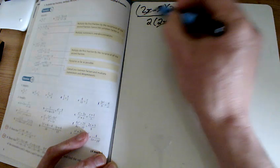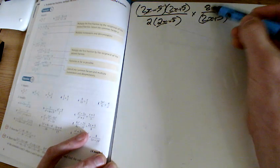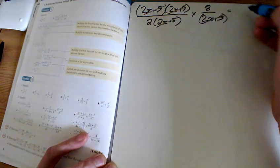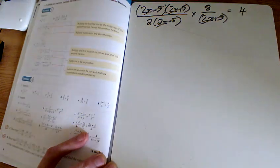The 2x minus 5 with the 2x minus 5, so I've got an 8 on the top and a 2 on the bottom. 8 divided by 2 makes 4.